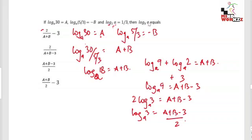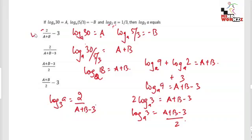So log a base 3 equals (a plus b minus 3) divided by 2. But we need log 3 base a, so we take the reciprocal: log 3 base a equals 2 divided by (a plus b minus 3). The correct option is option A. This was not too easy but not too difficult — you need to know the basics of logarithms.